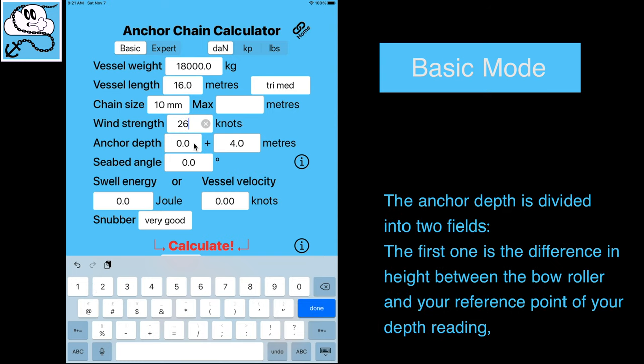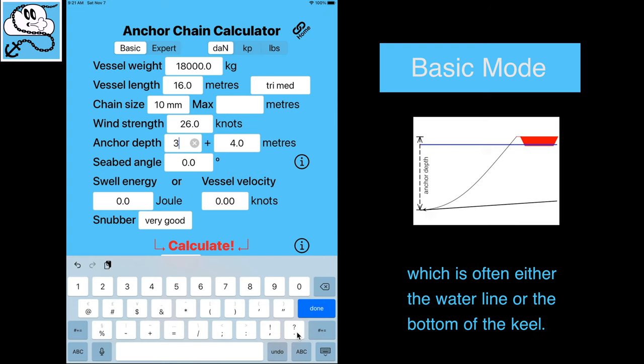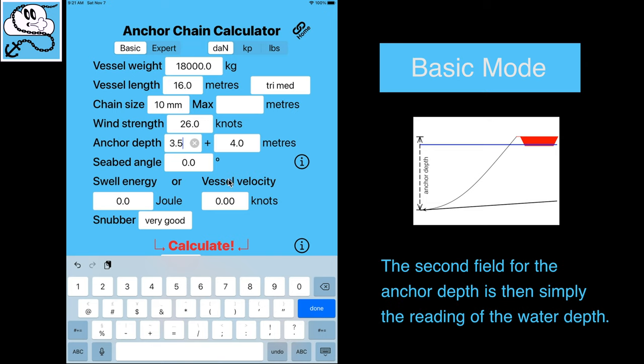The anchor depth is divided into two fields. The first one is the difference in height between the bow roller and your reference point of your depth reading, which is often either the water line or the bottom of the keel. The second field for the anchor depth is then simply the reading of the water depth.